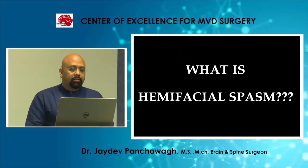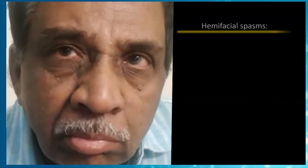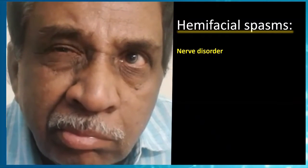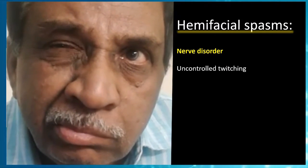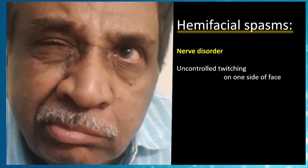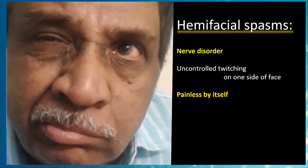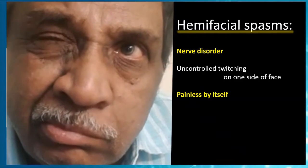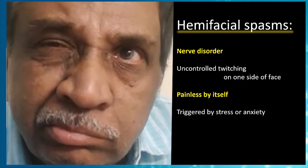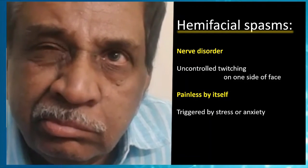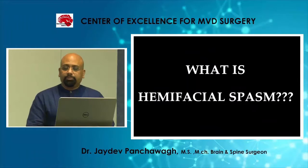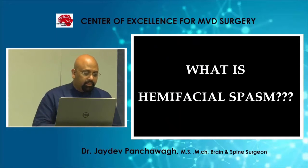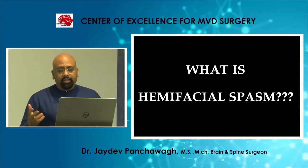So, what is Hemifacial Spasm? If you carefully look at the right half of this person's face, you can see continuous twitches — like a volley of impulses moving the face. These twitches are coming automatically without him doing anything. These are very, very embarrassing spasms, which come especially whenever the person is engaged in social interactions.